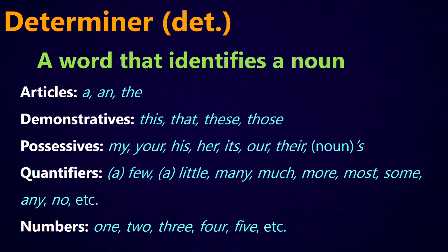The first group we're going to look at are determiners. Determiners are a closed group of words — if you learn these words, there are no new determiners to learn. A determiner is a word that identifies or introduces a noun in a sentence. Basically, a determiner tells you which one you're talking about for a noun in a sentence.